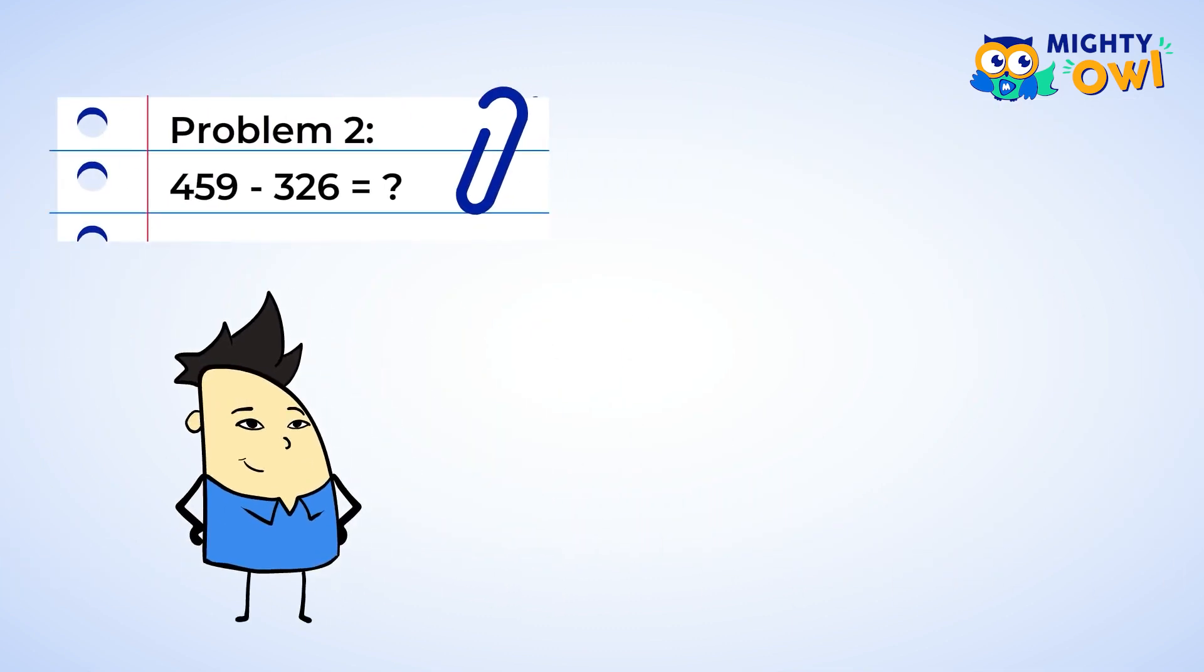Let's use the same strategy now for subtraction. Four hundred fifty-nine can be broken up into four hundred plus fifty plus nine. Three hundred twenty-six can be rewritten as three hundred plus twenty plus six. Now we can look at each of the place values and subtract them. Let's start with the ones.